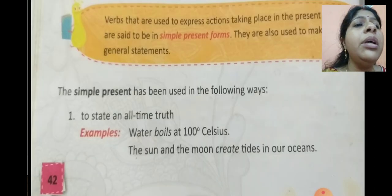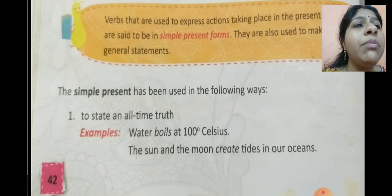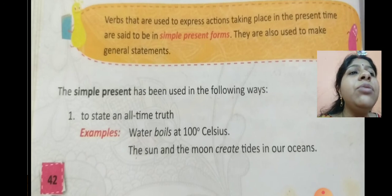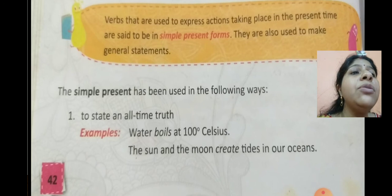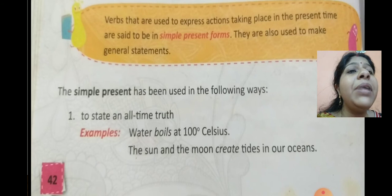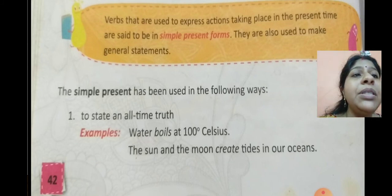Now open your book and come to page number 42. In page number 42 you will see: verbs that are used to express actions — to tell about what is happening or taking place in the present time — are said to be in simple present form.